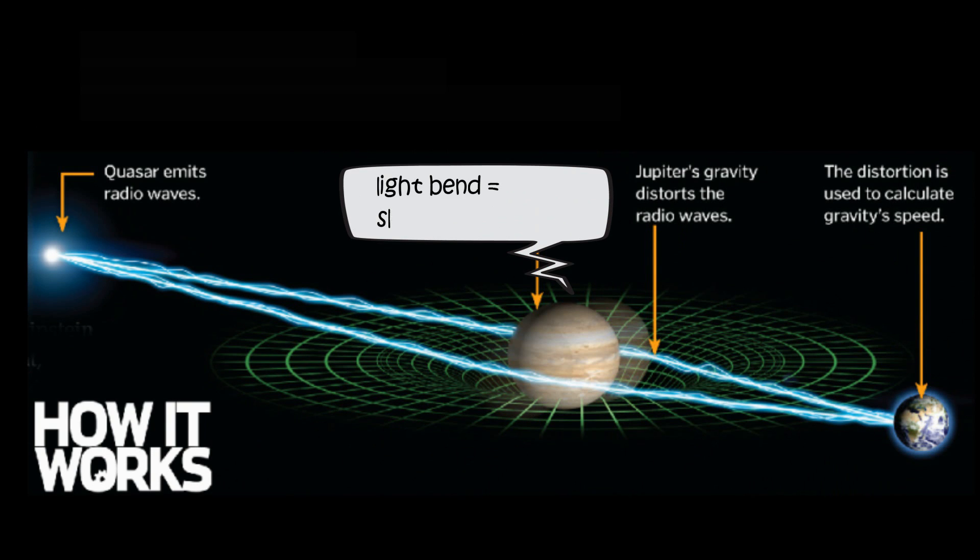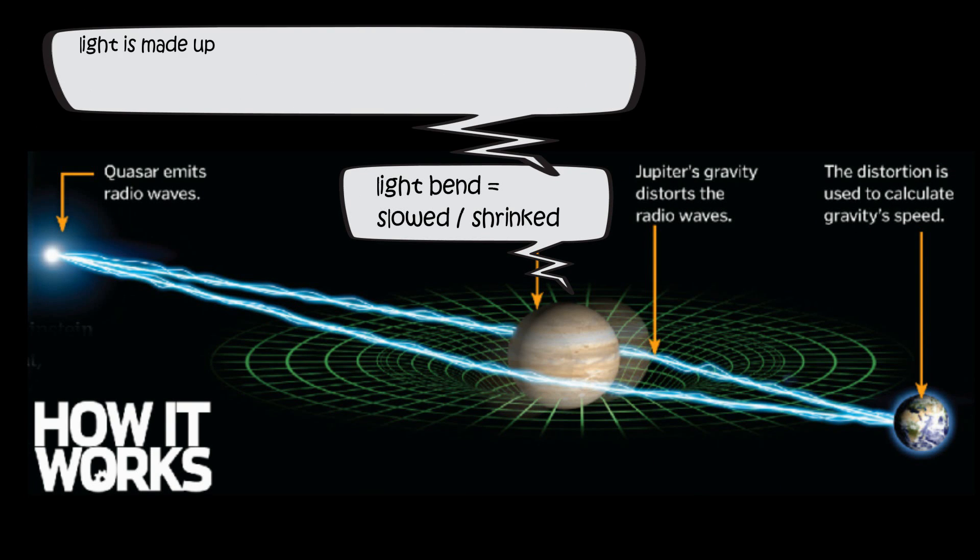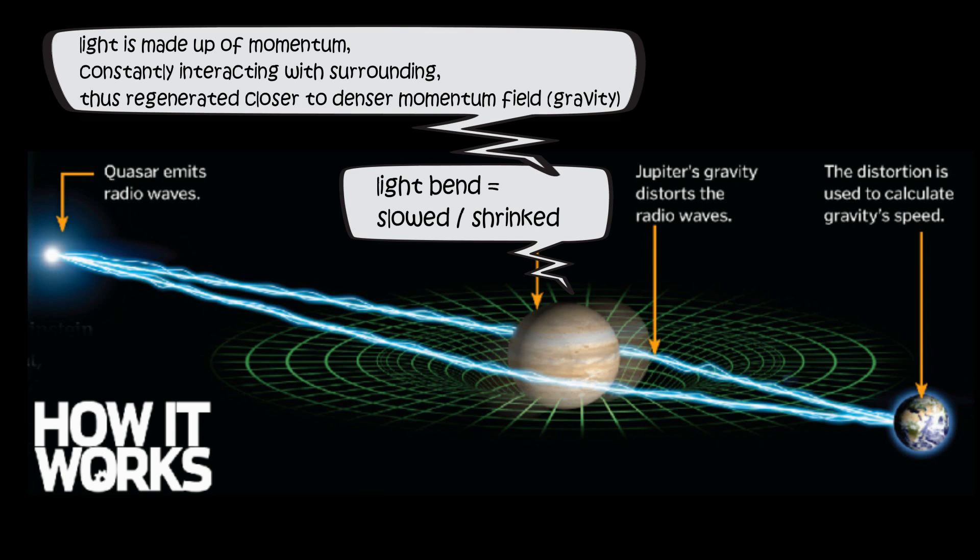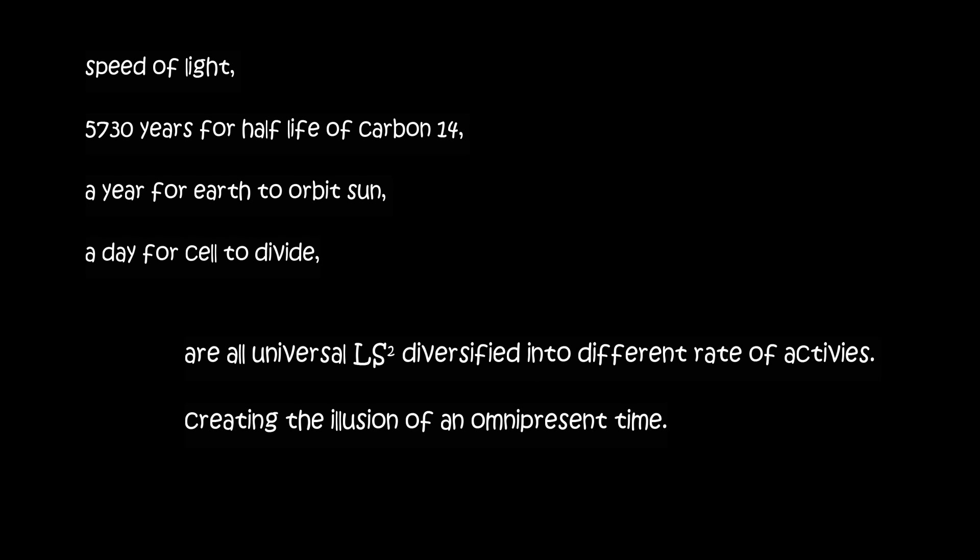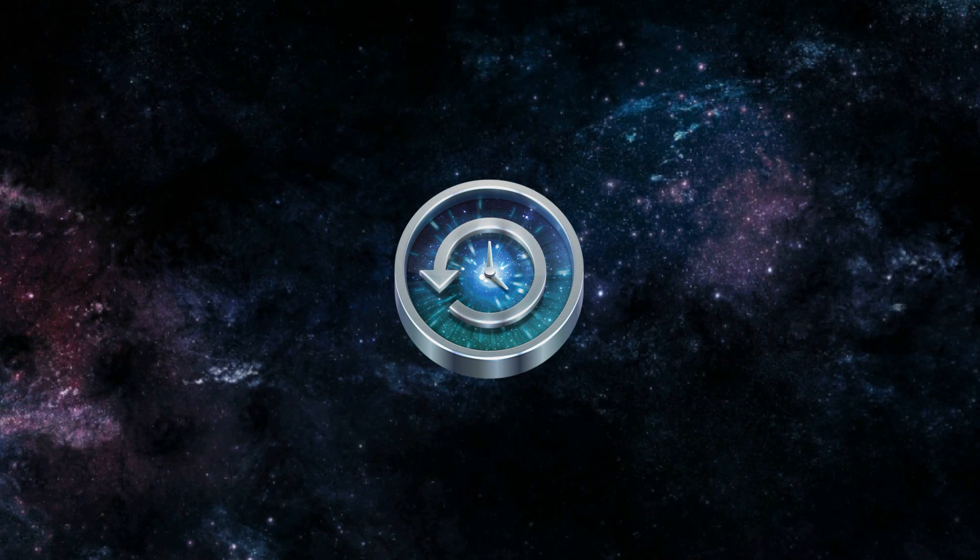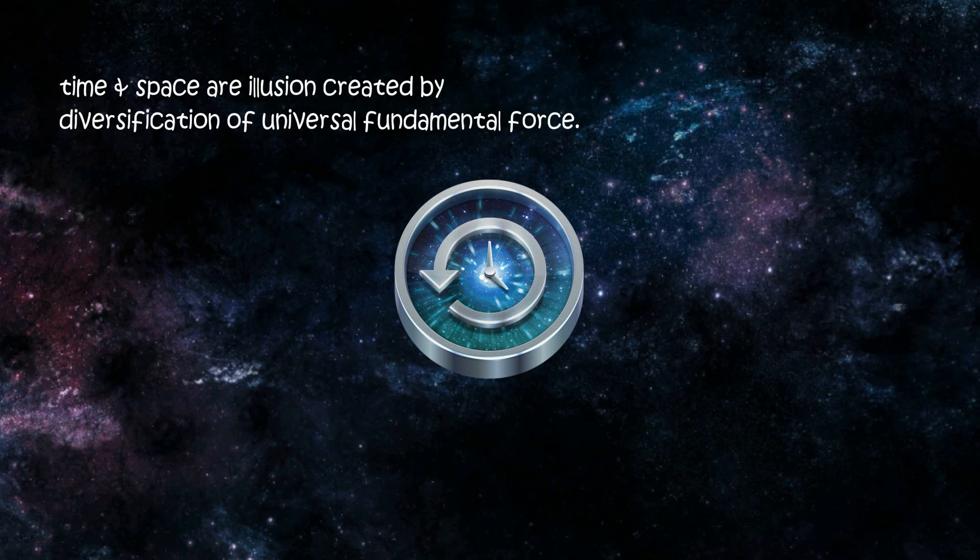From momentum curving into particle form to light bending around planets are all same effects of time dilation or space contraction. The collaboration of different rates of activities orchestrate the illusion of an omnipresent time. Time and space does not exist. Both evolved from field momentum interactions. Diversification of speed of activity and density creates the illusion of time and space.